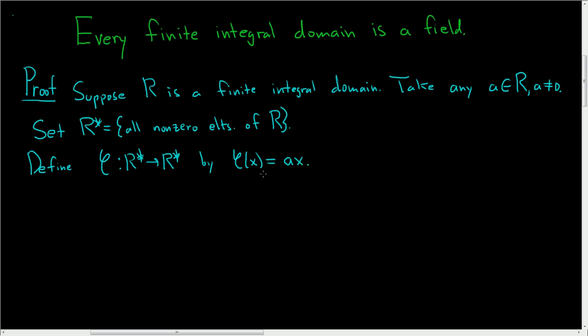The goal is to show that this is a surjection, in other words it's onto. If we show it's onto, then since one is a nonzero element, that means ax equals one for some x, and we have shown that a is a unit.